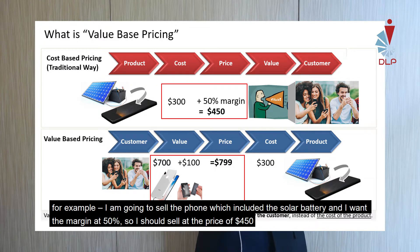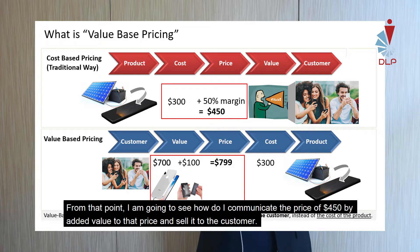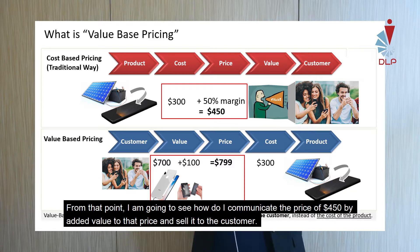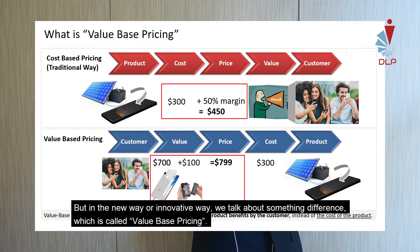From that cost, you mark up the margin you want. For example, I'm going to sell a phone that includes a solar battery, and I want a margin of 50%, so I should sell at 450 US dollars. From that point, I figure out how to communicate the price of $450 by adding value and selling it to the customer.